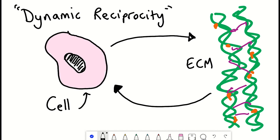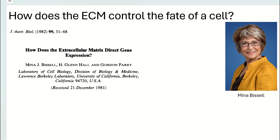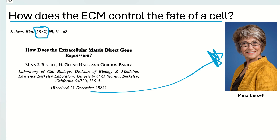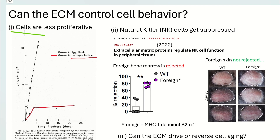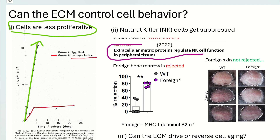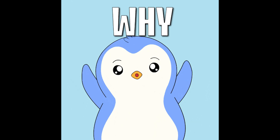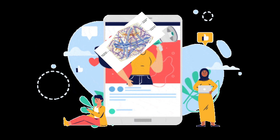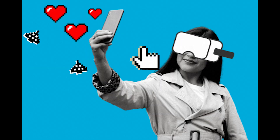But how would the ECM control the cell? This question is not new — in fact, there was a review article with this name published in 1981. A few examples: firstly, the ECM can influence the cell's replicative capacity. Cells grown on a plastic dish will keep growing until they run out of space, but if you put those same cells into a collagen matrix, cell proliferation quickly stops. Another interesting example is how the ECM seems to restrain activity of immune cells, particularly innate immune cells like natural killer cells.